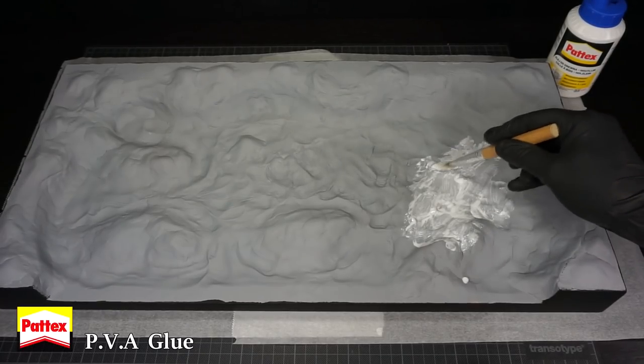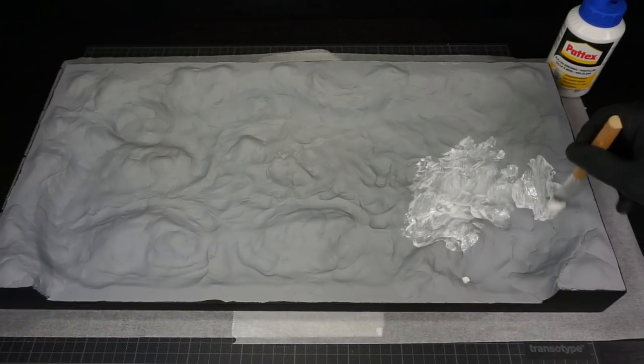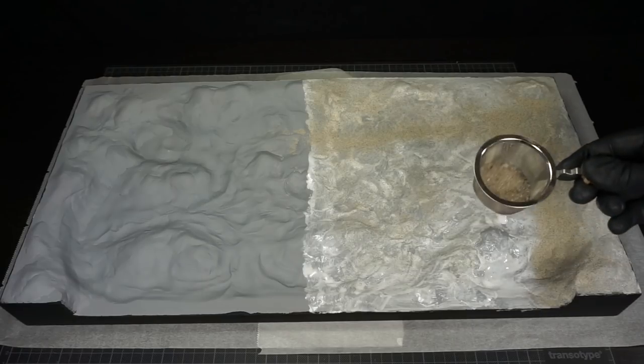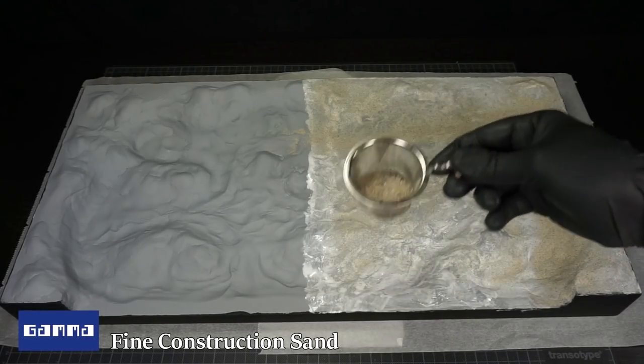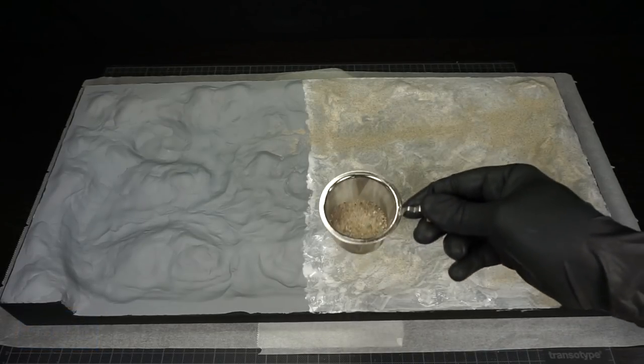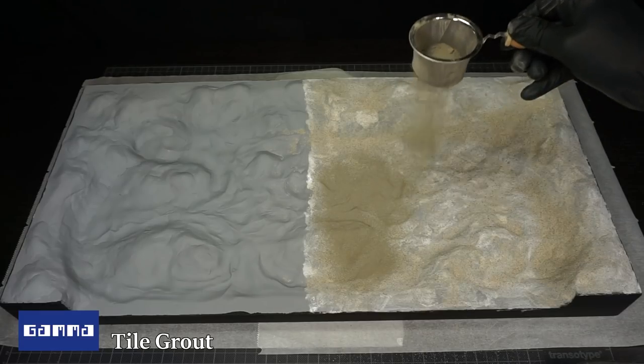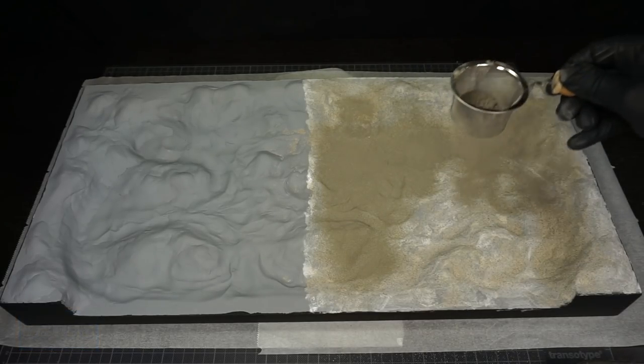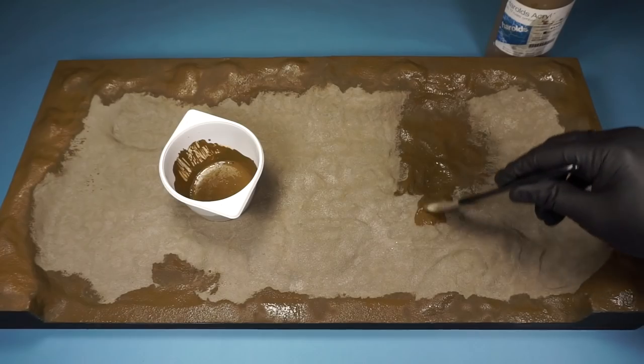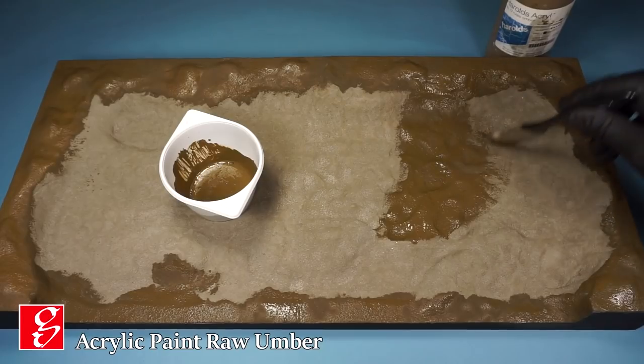The base is then given a layer of PVA glue followed with some fine sand and tile grout. This will create a strong foundation and will also provide lots of grip for future layers. The base is then coated with a layer of acrylic roll under.